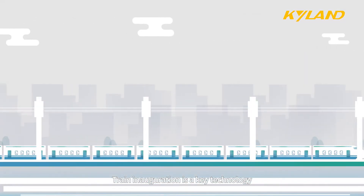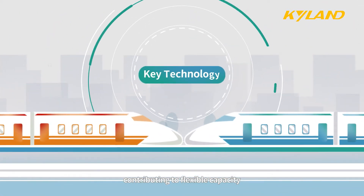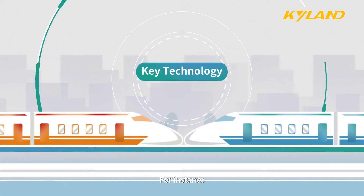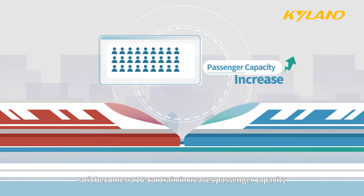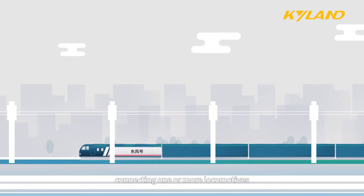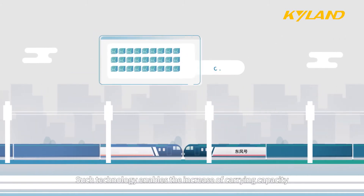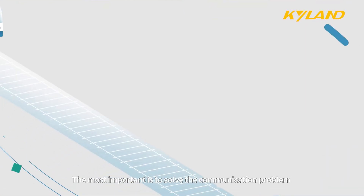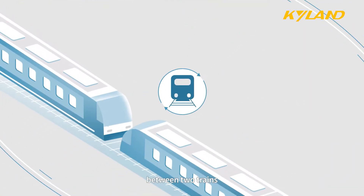Train inauguration is a key technology contributing to flexible capacity. For instance, connecting two 8-car high-speed trains to form a 16-car train increases passenger capacity. Similarly, connecting one or more locomotives also increases passenger capacity. Such technology enables the increase of carrying capacity. The most important challenge is to solve the communication problem between two trains.